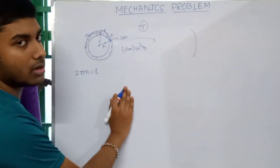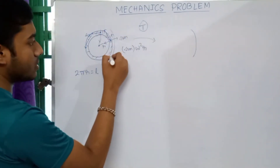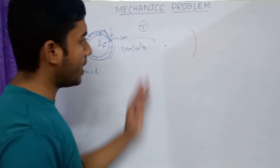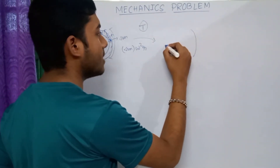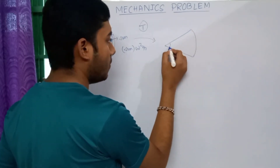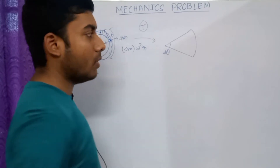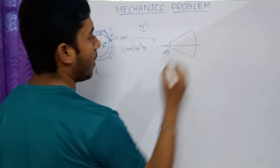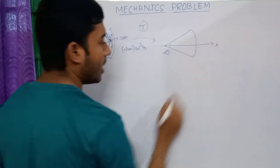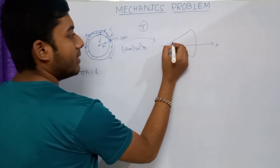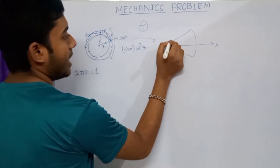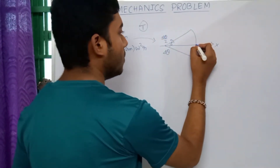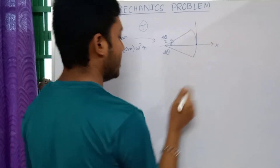I am drawing a small arc of this circular loop. This arc makes an angle δθ with the center of the circle. If we make a horizontal axis, this angle is divided into two equal parts, each of magnitude δθ/2. The tension is directed tangentially.